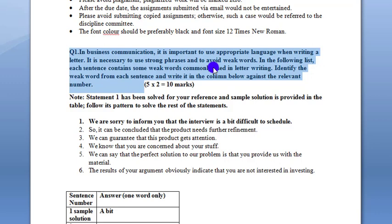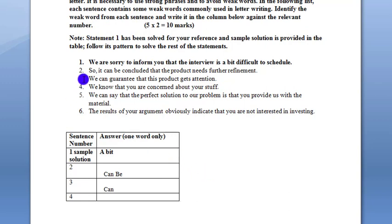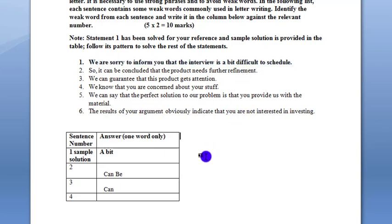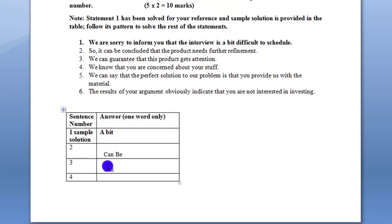The first statement is: 'We are sorry to inform you that the interview is a bit difficult to schedule.' Here, 'a bit' is the weak word. Another example: 'It can be concluded that the product needs further refinement.' Here, 'further refinement' contains a weak word. Another: 'We can guarantee that this product gets attention' — 'can be' is a weak word.